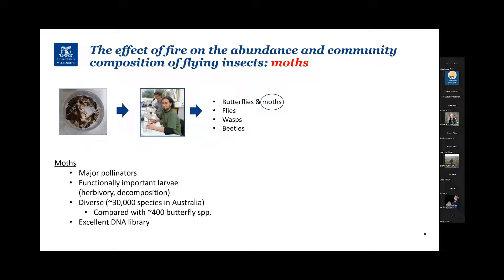Moths are very diverse in Australia, with in excess of 30,000 species. Most people are aware of our butterflies, but the moths far outweigh butterflies in terms of species richness.